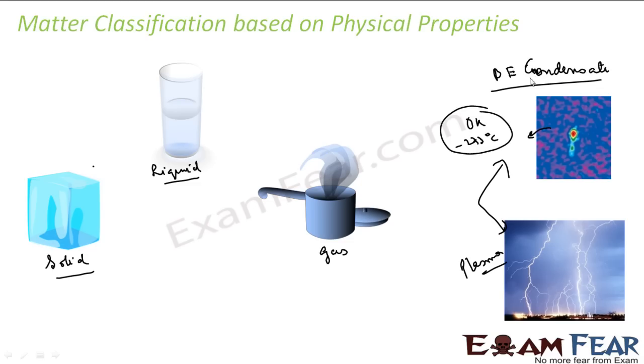We will be focusing only on these three, solid, liquid and gas in the whole chapter. So anything that has mass is matter. And for our chapter, matter is classified into three different types: solid, liquid and gas.